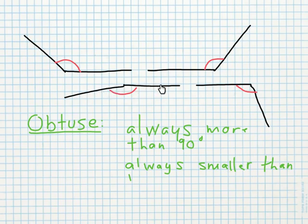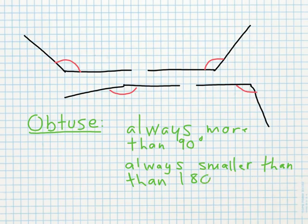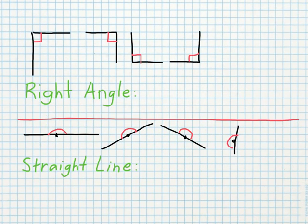Now we have a set of obtuse angles. We have the arms, and the interior angles marked in red. You can see each of these obtuse angles is different, but they all share a couple of characteristics: they are always more than 90 degrees, and always smaller than 180 degrees.